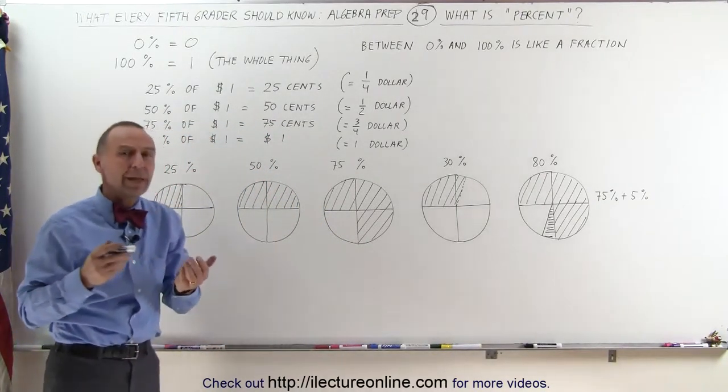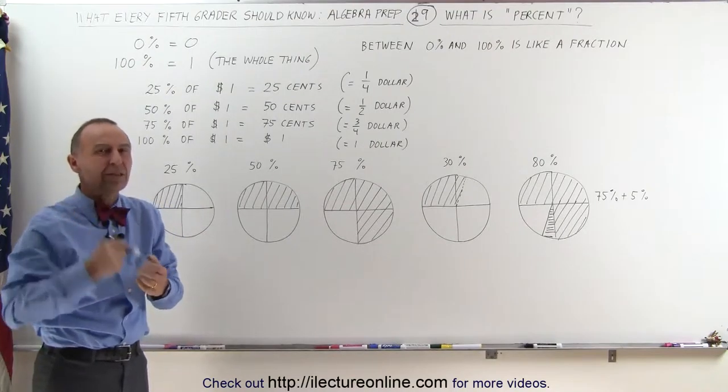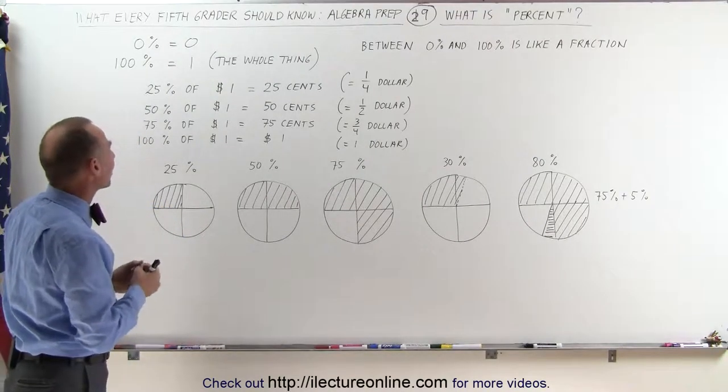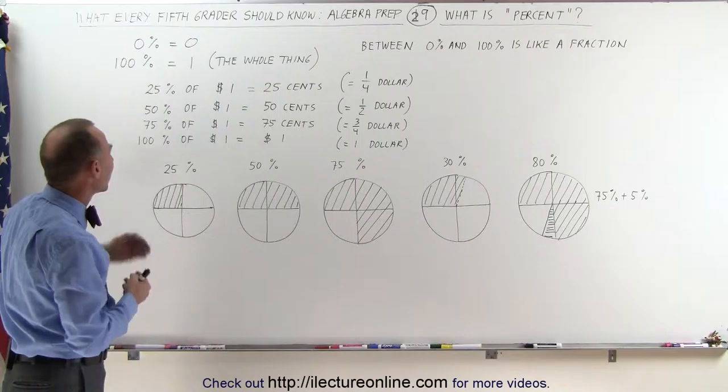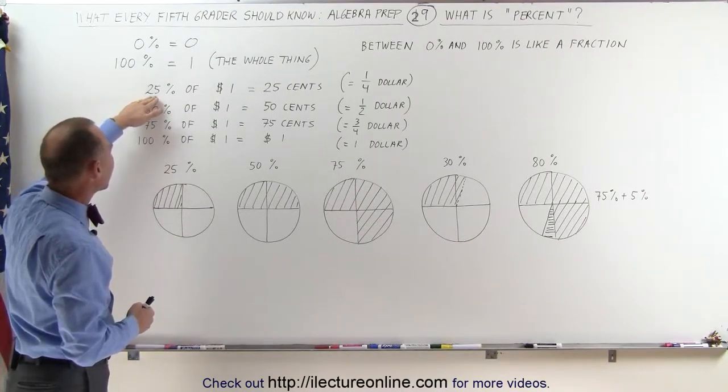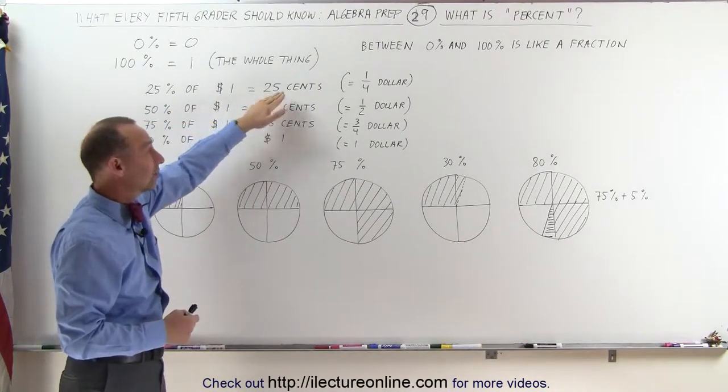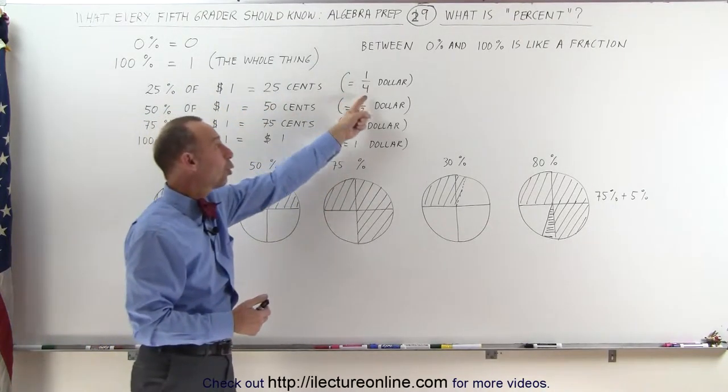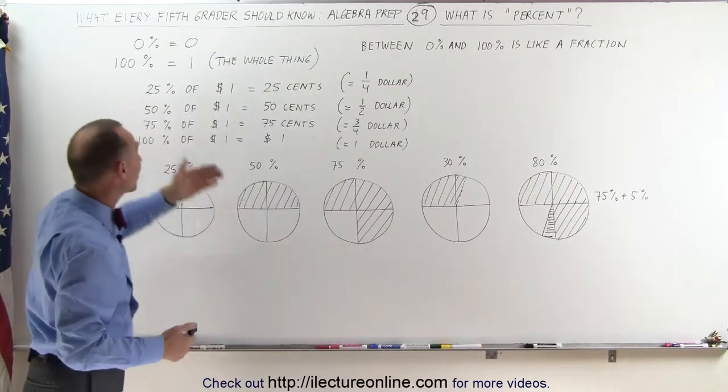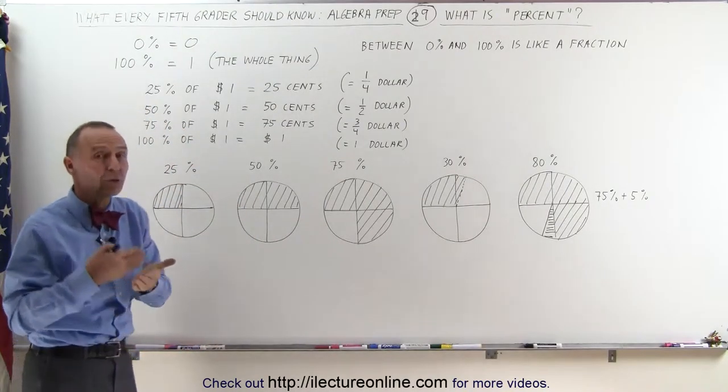And usually when we compare it to money, it's easier to get the feeling for it, to get the perception of what really percent means. Let's say we have 25% of a single dollar. Well, 25% of a dollar means we have 25 cents, which means we have 1 quarter of a dollar. That means 25% is the same as a quarter.